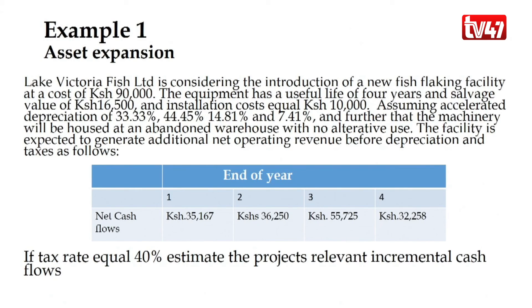The machinery will be housed in an abandoned warehouse with no alternative use. The facility is expected to generate additional net operating revenue before depreciation and taxes as follows: year one 35,165; year two 36,250; year three 55,725; year four 32,258. The tax rate is assumed to be 40%.